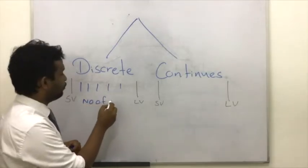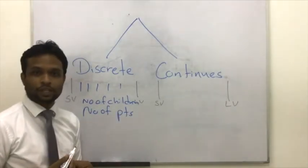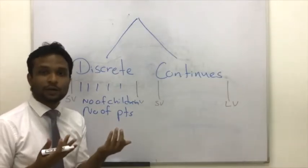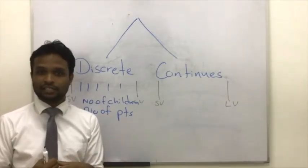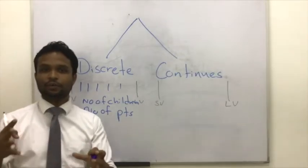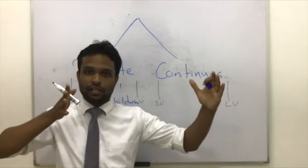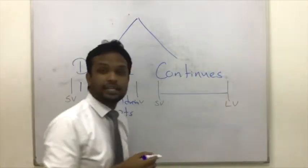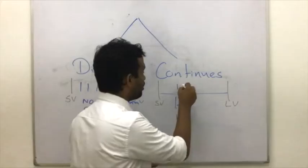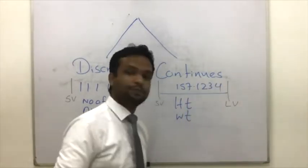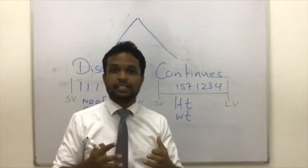For example, the number of children in a class or the number of patients in a hospital. We can't have half a patient or half a number — 30, 31, 40, or 50 children in a class, but we can't have 39.5 students. In a continuous variable, however, anything within the smallest and largest value is possible. For example, height or weight — we can have a height of 157.1234. Any decimal value is possible. We call this type of variable a continuous variable.